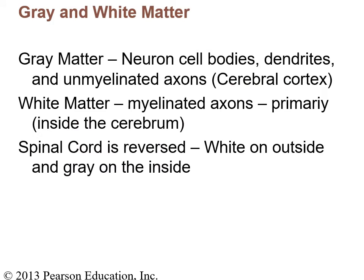One thing to pay attention to is the difference between gray matter and white matter. Gray matter appears gray because it has no myelin. Wherever there is myelin, it appears white — so myelinated axons are white matter. Gray matter includes neuron cell bodies (soma), dendrites, and unmyelinated axons. Gray matter is found on the outside of the brain — that area is called the cerebral cortex — while the inside of the cerebrum is white matter. In the spinal cord it is reversed: white matter is on the outside and gray matter is on the inside.